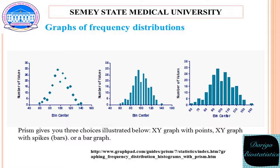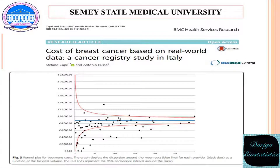The graph on the right has no X values, just category names which happen to be numbers, so it's not possible to fit the curve. The next graphical illustration is a funnel plot — specifically a funnel plot for treatment costs of breast cancer. The graph depicts the dispersion around the mean cost (blue line) for each provider (black dots) as a function of the hospital values. The red lines represent the 95% confidence interval around the mean.